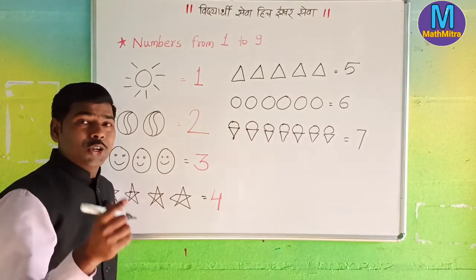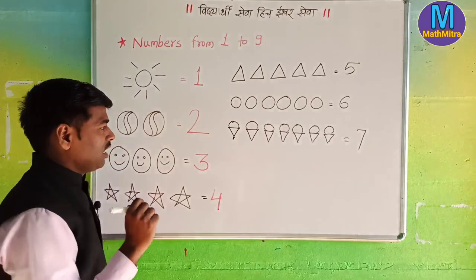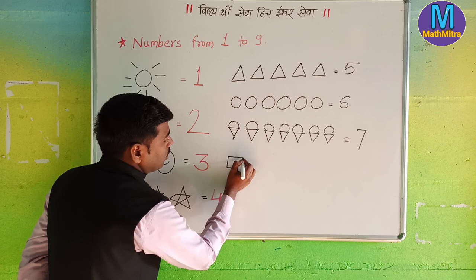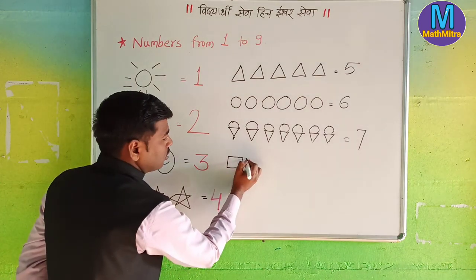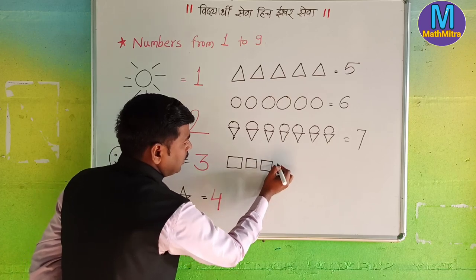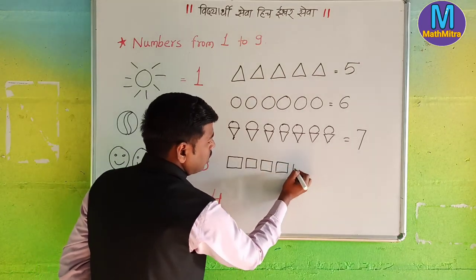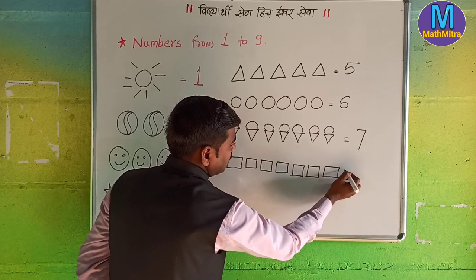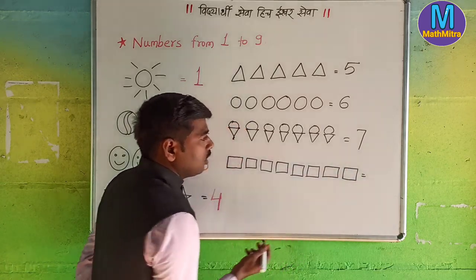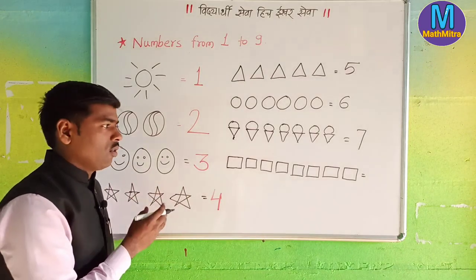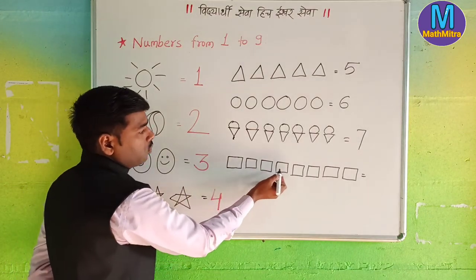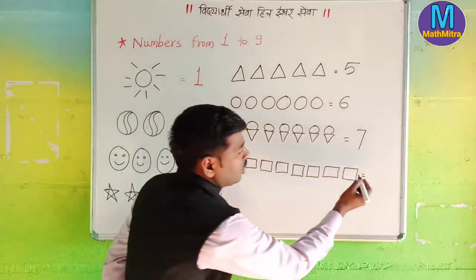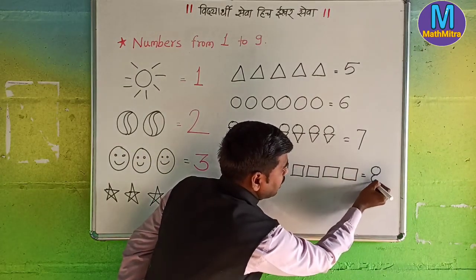Now the next one — do you know what is next? Here we are going to draw the rectangle — one, two, three, four, five, six, seven, and this one is eight. How many rectangles are there? There are one, two, three, four, five, six, seven, eight. How can we write eight? It is so simple — just write one zero, upside another one zero — this is eight.